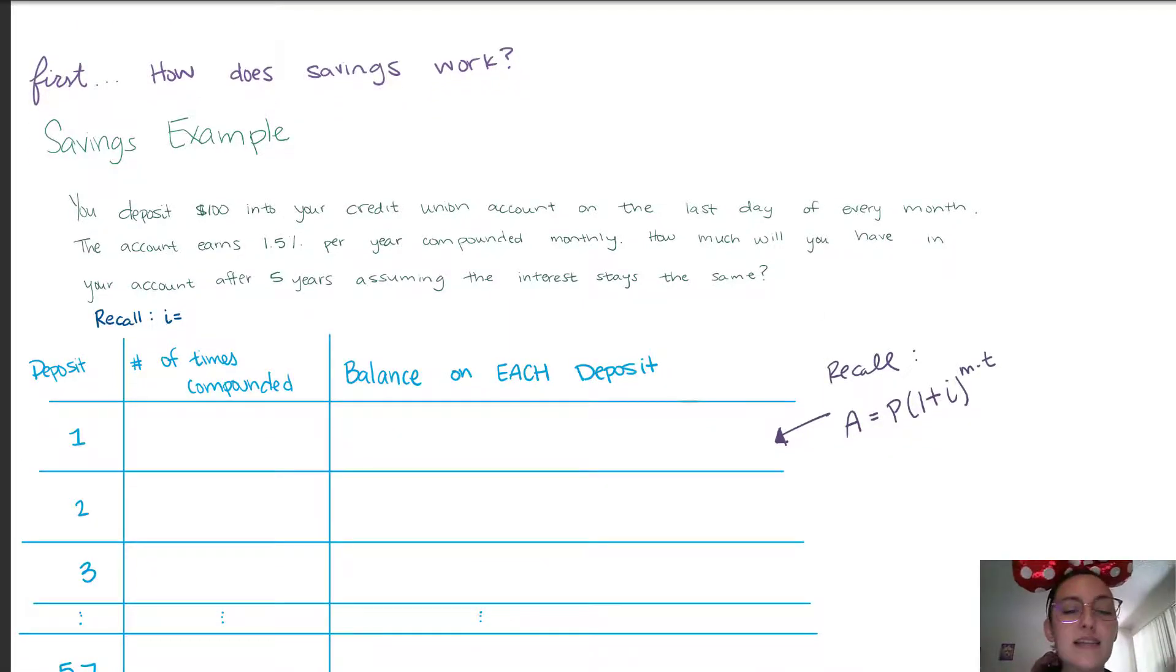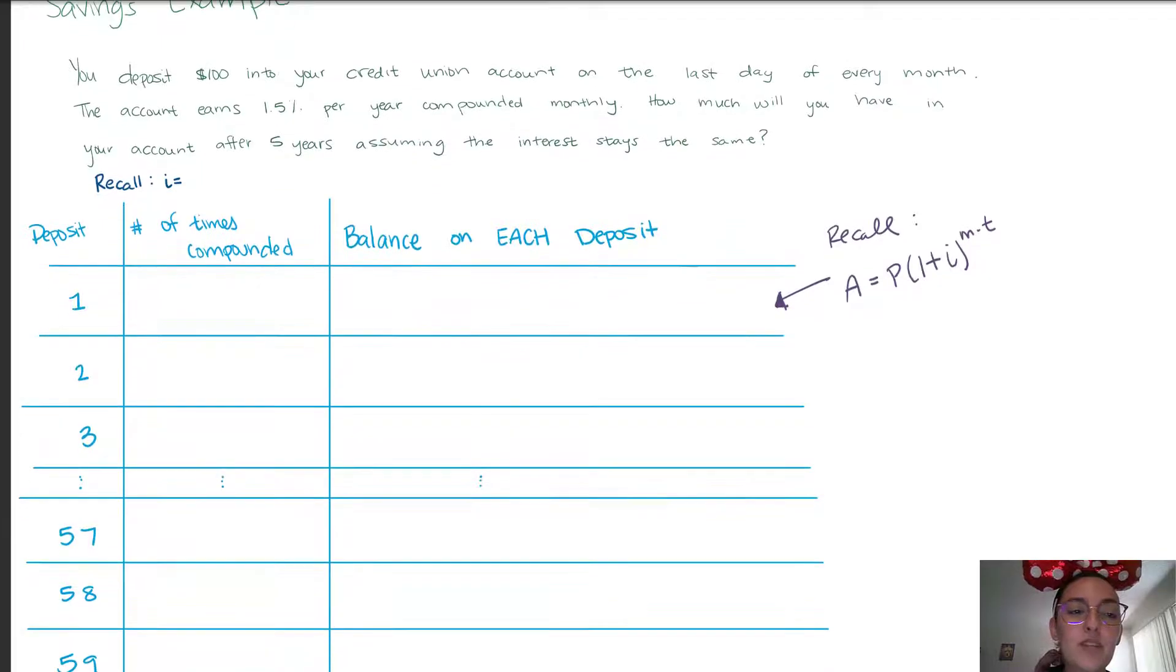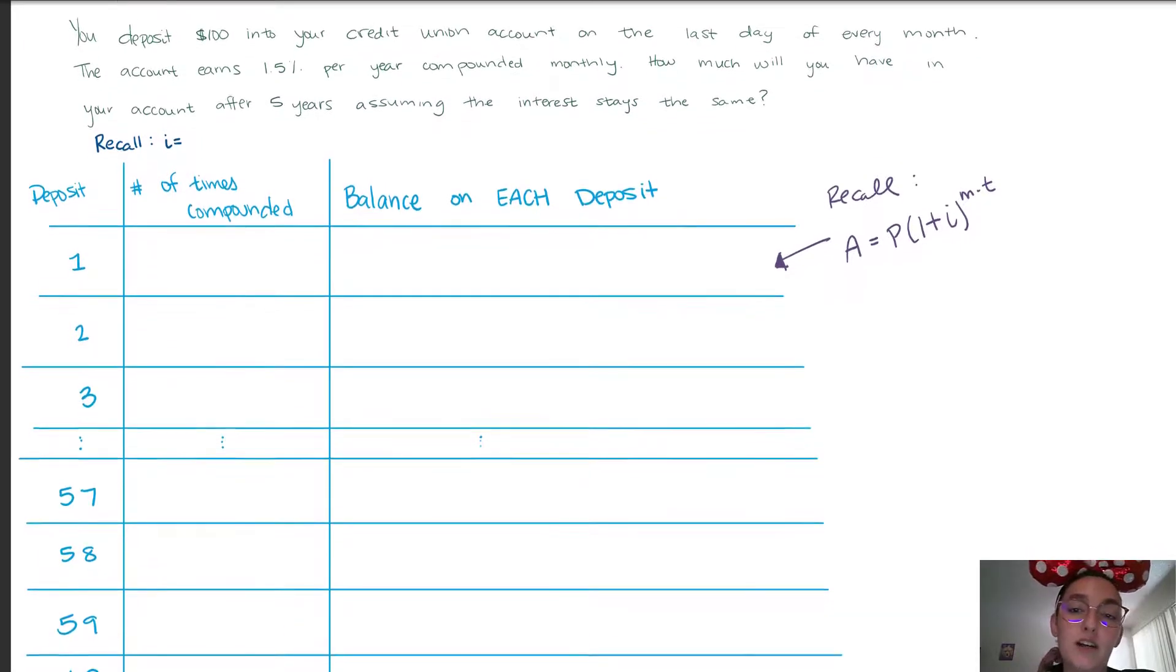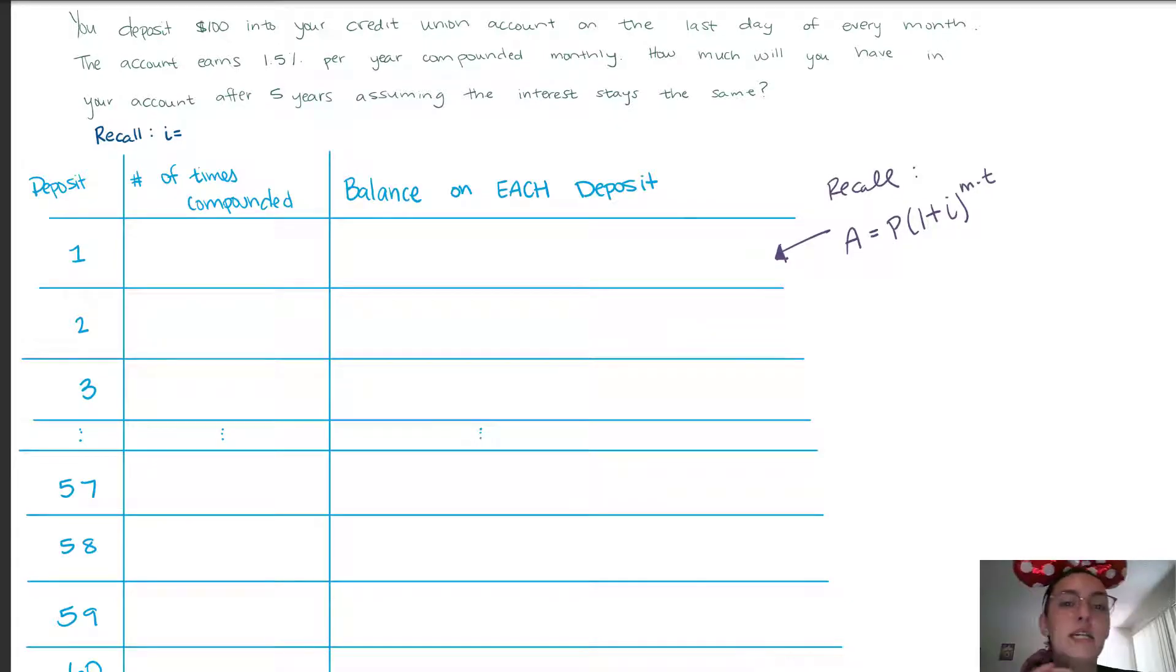Before we determine how much we need to deposit regularly, let's see how savings works. Let's go through this example. Let's say that we deposit one hundred dollars into our credit union on the last day of every month. A little side note, I have a credit union account and I've learned that credit unions have the lowest interest rates on car loans, mortgage loans and credit cards.